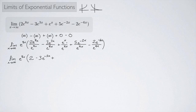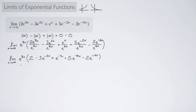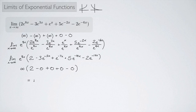So we have the limit as x approaches infinity of e to the 8x times the quantity 2 minus 3 e to the negative 5x plus e to the negative 7x plus 5 e to the negative 10x minus 2 e to the negative 14x. The e to the 8x out front gives infinity, and all the negative-exponent terms go to 0, leaving us with 2. So we have infinity times a positive number, and the limit equals positive infinity.